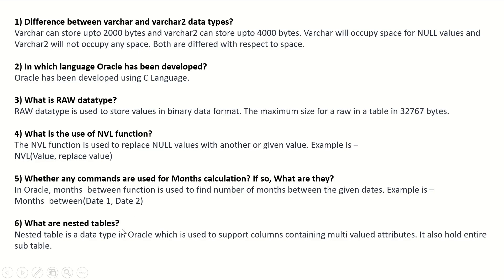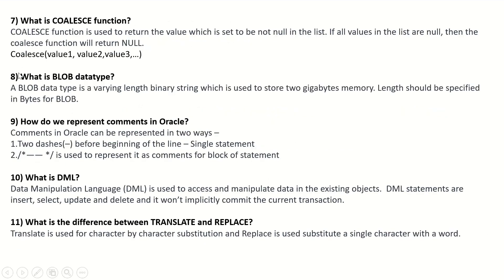What are nested tables? A nested table is a data type in Oracle which is used to support columns containing multi-valued attributes. It can also hold an entire subtable. What is the COALESCE function? COALESCE function is used to return the first value that is set to not null in the list. If all values in the list are null, COALESCE returns null. Syntax: COALESCE(value1, value2, value3, ..., n).